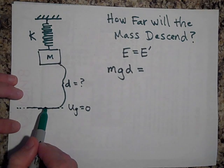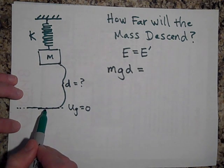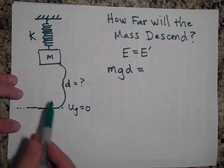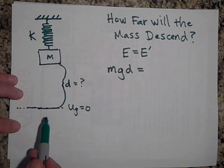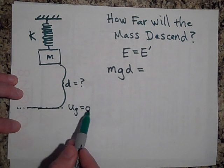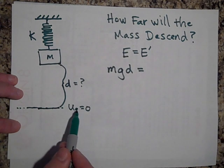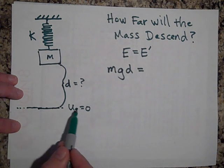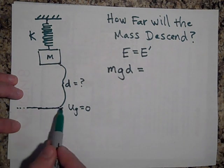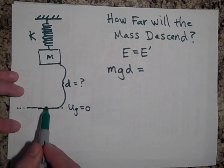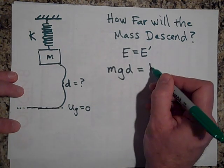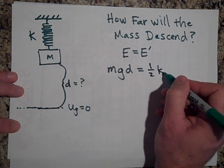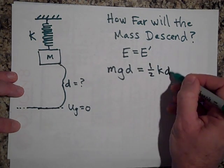That will equal the energy when it gets down here. It's not moving, it's stopped, it's about ready to turn around and come back up. So it's actually stopped there. It's got no potential energy because that's my zero potential energy gravitational line, and so the only energy it has is the energy stored in the spring, which is one half k times x squared, but that would be D squared.